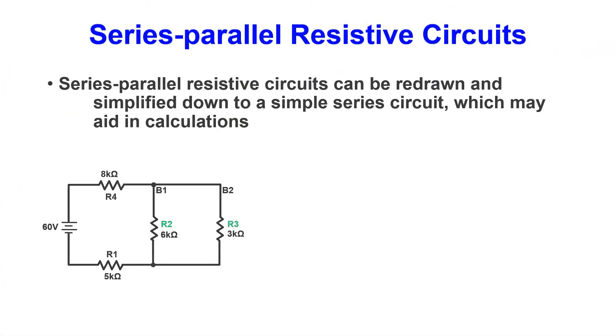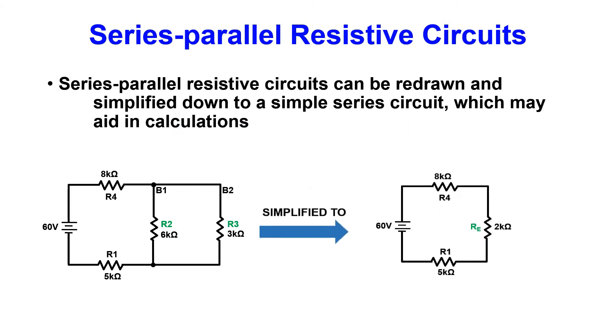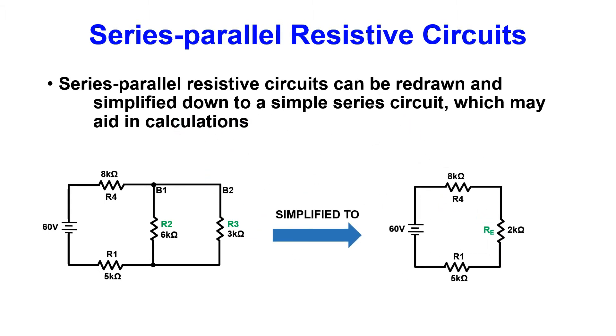Series parallel circuits can be redrawn and simplified to a simple series circuit. This helps us in our calculations. As you can see here, once we simplify the parallel portion of the circuit, R2 and R3 become RE, or resistive equivalent.